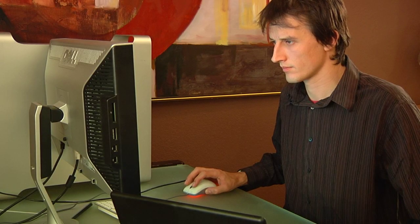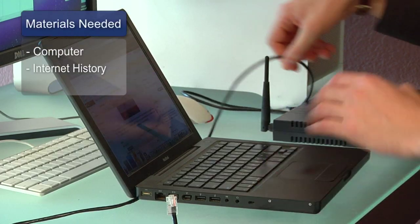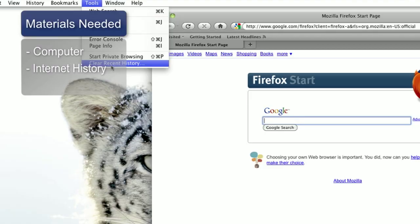Hi, my name is Chris Noble. I'm an independent IT consultant and professional photographer. My website is www.doglikehorse.com. This is a short video on how to permanently clear internet history. Things you need for this are a computer and an internet history you'd like to remove.